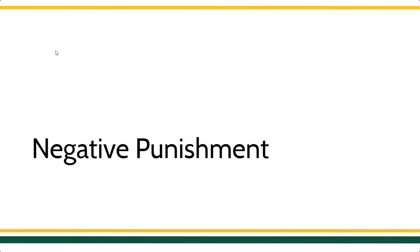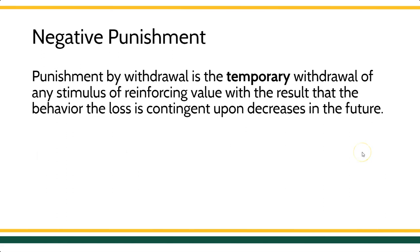This is a relatively straightforward procedure. People usually get this pretty quickly, but I want to review just a couple of important factors. When we're talking about negative punishment, you may also hear this described as punishment by contingent withdrawal. What we're talking about is a procedure where a stimulus is temporarily withdrawn — a stimulus that has reinforcing value — with the result that the behavior the loss is contingent upon decreases in the future. Punishment by contingent withdrawal is the temporary withdrawal of any stimulus of reinforcing value, with the result that the behavior that the loss was contingent upon decreases in the future.